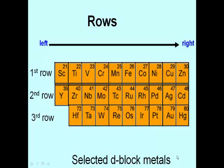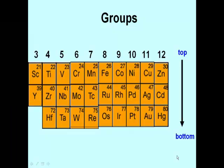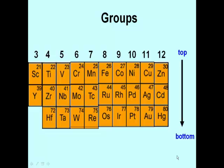Now if we read the elements going from top to bottom in a column, we will actually be reading the elements within a group. For instance, scandium and yttrium both belong to group 3. Similarly, titanium, zirconium and hafnium all belong to group 4. Likewise, nickel, palladium and platinum all belong to group 10.